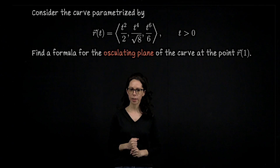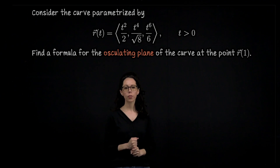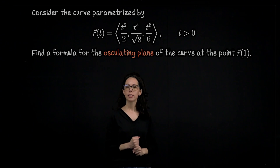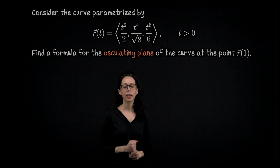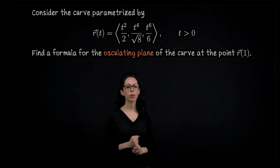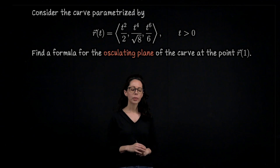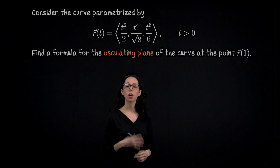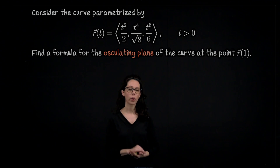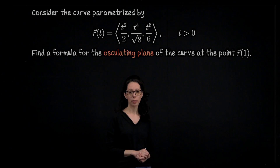In this example, we want to consider the parametric curve r(t) = (t²/2, t⁴/√8, t⁶/6). We would like to find the equation of the osculating plane at r(1), or in other words, when the parameter t equals 1.